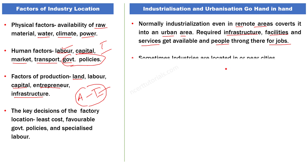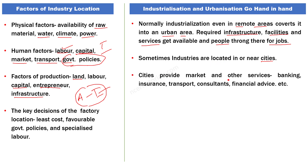Industrialization से ही नहीं, धीरे-धीरे markets अपने आप भी develop होती हैं। कभी-कभी industries जहाँ पहले से cities हों उनके आसपास लगती हैं - जैसे Delhi के नजदीक Gurgaon और Noida हैं। Cities provide market and other services - शहरों में पहले से अच्छी-खासी markets होती हैं, banking, insurance, transport, consultants, financial advisors सब मिल जाते हैं। Companies और industries भी cities में अपनी units establish करना चाहती हैं - इसे हम कहते हैं agglomeration economies।